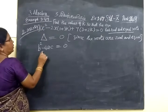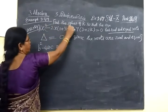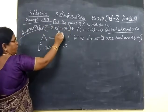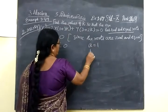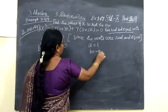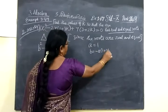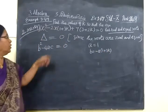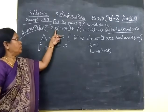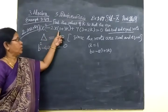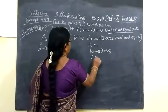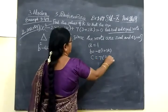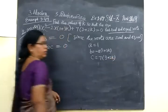So A equal to 1. B equal to this complete, leaving x. A equal to 1, B equal to minus 2 bracket (1 plus 3K). Coefficient of x is minus 2, then 1 plus 3K. This is B. Then C equal to 7 bracket (3 plus 2K), constant term.